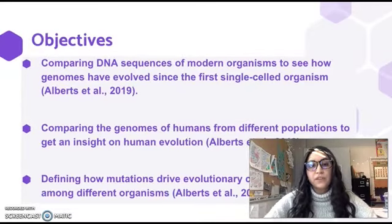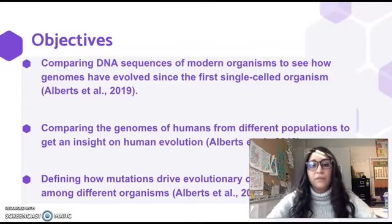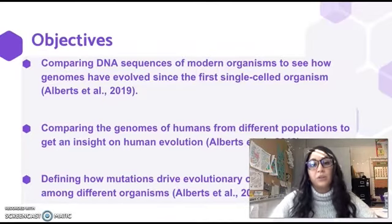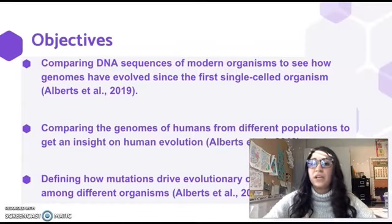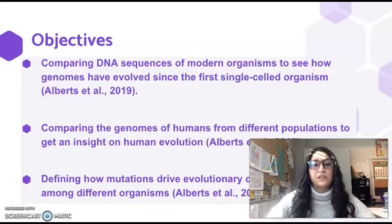The objectives for this lesson are to compare DNA sequences of modern organisms to the first single-celled organism to see how we have evolved. The second is to compare the genomes of different humans from different populations to see how genetically similar we all are. And then to define how mutations drive change in evolution and explain how mutations can cause differences between individuals in a specific population.